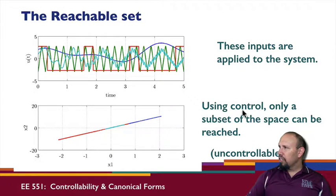In this case, using control, only a subset of the space is reached. And I can show that if I allow larger values of control, I can get this to extend further, but it will still extend along this line. This shows that my system is uncontrollable. I can't just reach any position in this state space.